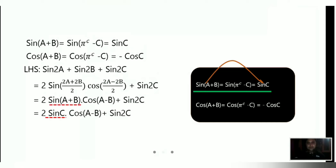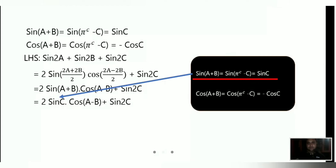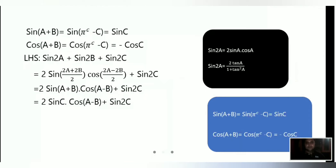Now, we previously found that sin(A+B) = sinC. So in place of sin(A+B), we write sinC. This gives us 2sinC·cos(A-B) plus sin2C, where sin2C is carried forward for the next step.